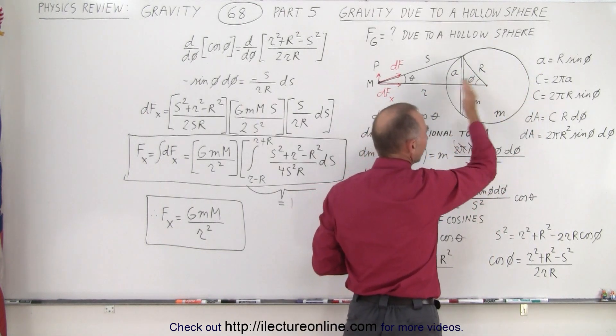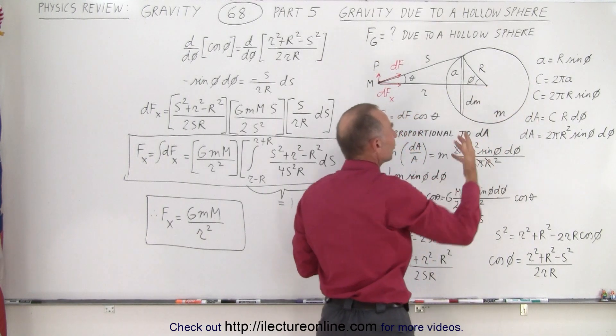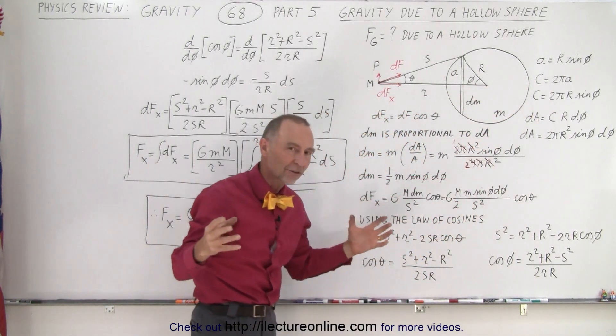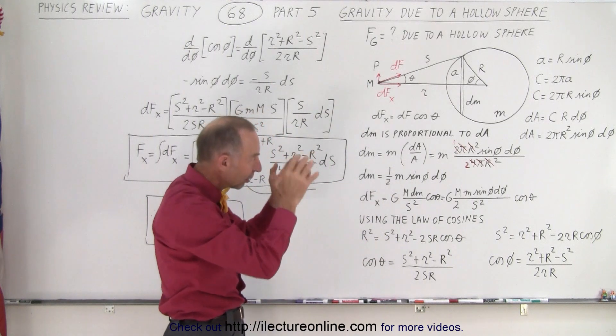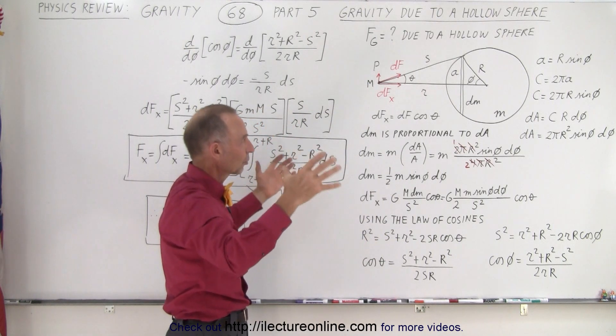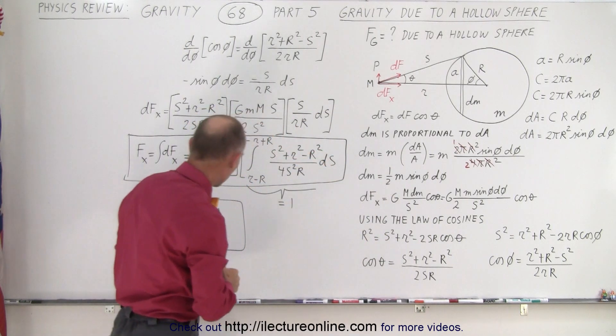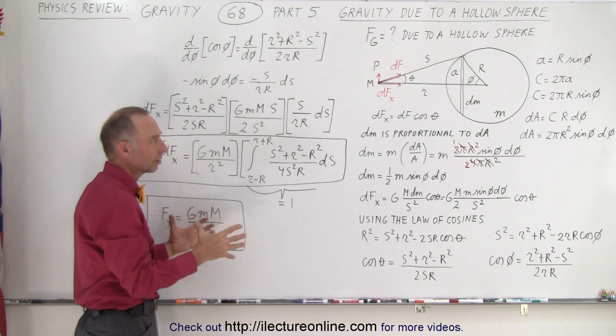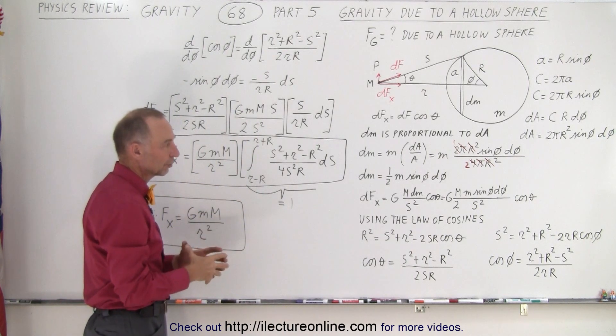hollow spheres that make up the solid sphere, you then realize that it is as if all the mass is concentrated at the center for each little hollow sphere that makes up the total sphere. And so you will end up with the very same equation for the force of gravity for a solid sphere as you would for a hollow sphere.